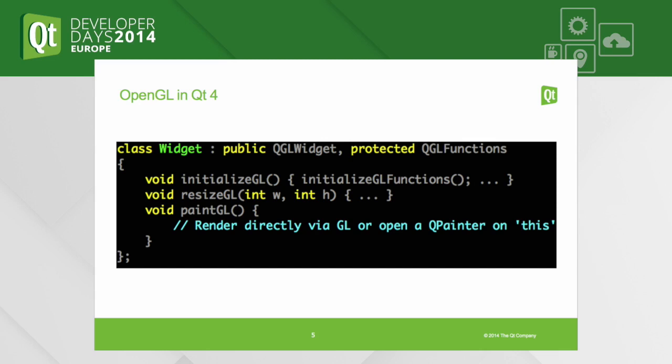How do you add your OpenGL scene to a widget-based UI? By simply deriving from QGLWidget and re-implementing a bunch of functions. In paintGL you do either your direct GL calls — like glDrawArrays or whatever — or just use QPainter. In Qt 4, QPainter had at least two backends for OpenGL: one based on the fixed pipeline for OpenGL 1, and then a shader-based OpenGL 2 paint engine.